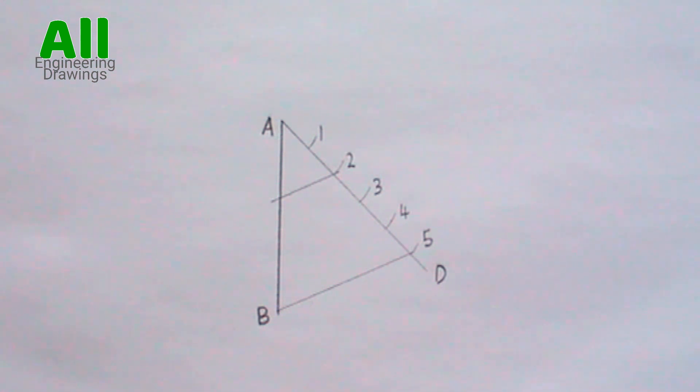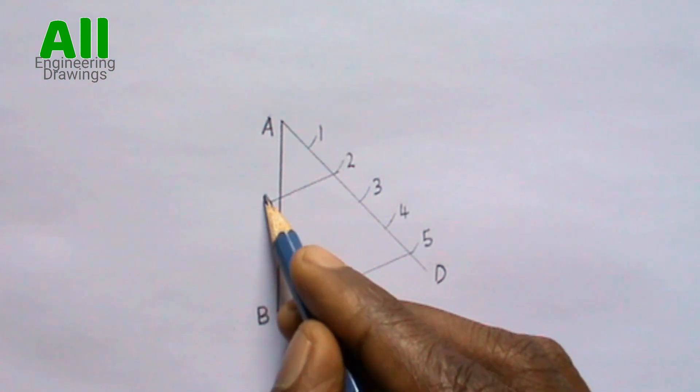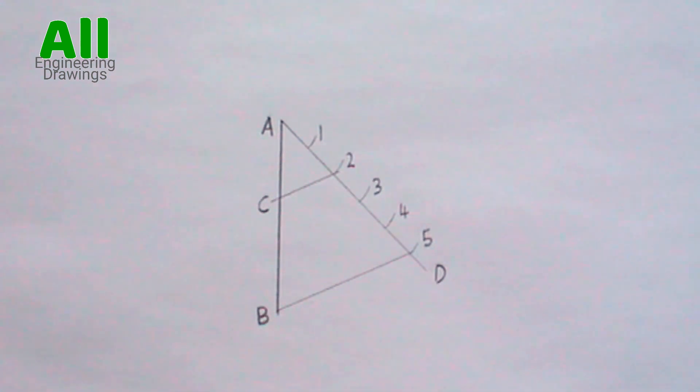Label the points where the line you drew intersects your line. Line AB has been successfully divided in a ratio of 2:3. You can indicate it this way.